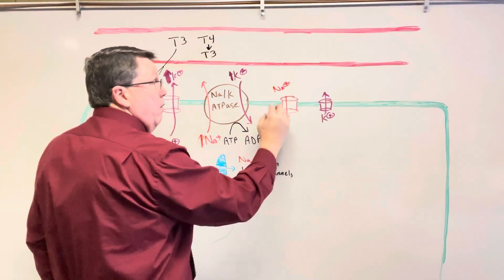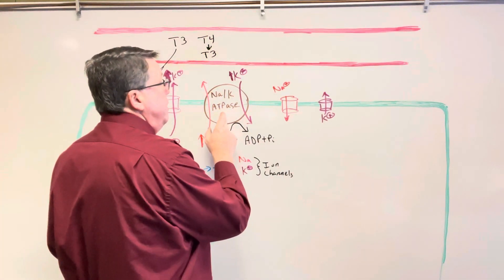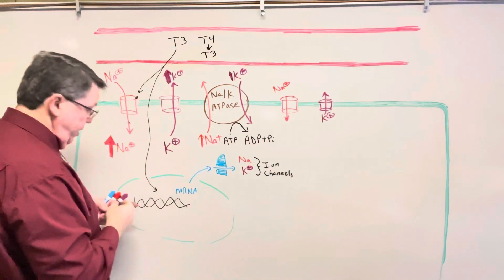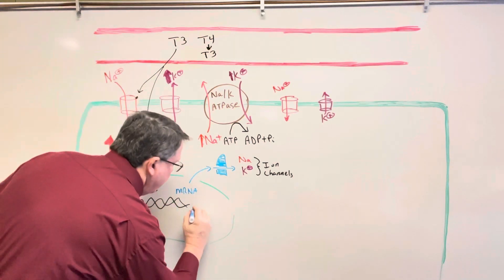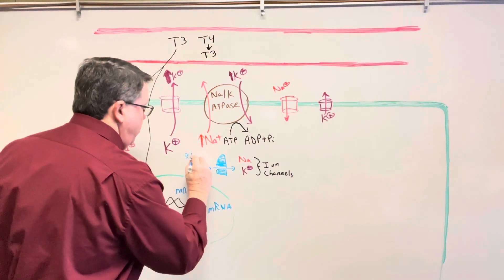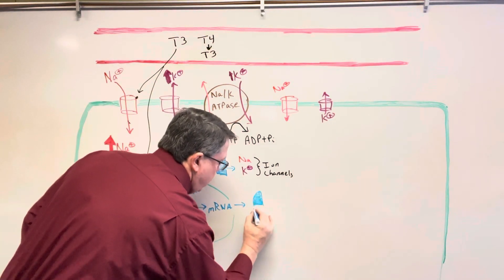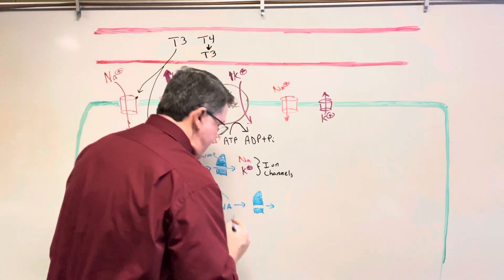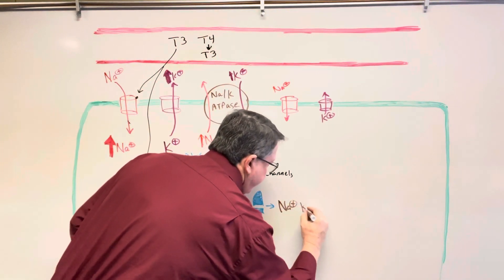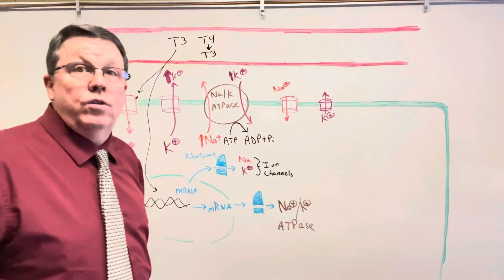So now how are we going to deal with all this extra? We've got it where it's more leaky and we're also increasing the number of ion channels. We need to make more sodium-potassium ATPase. What's going to happen is T3 is also going to make messenger RNA, and this is going to go out to a ribosome. The ribosome is going to translate this and make sodium-potassium ATPase.